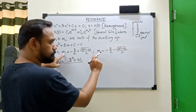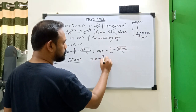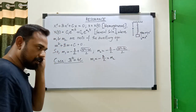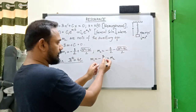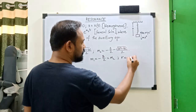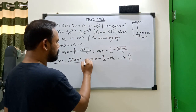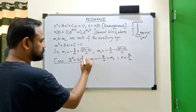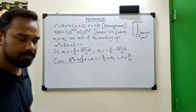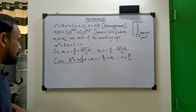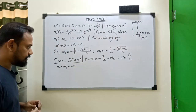When b² = 4c, the positive and negative square root terms both vanish, so m1 and m2 are both equal to −b/2. We give this value a name: let r = b/2, so m1 = m2 = −r. This is the case we are studying — when the two roots of the auxiliary equation are equal, that is the case of resonance.